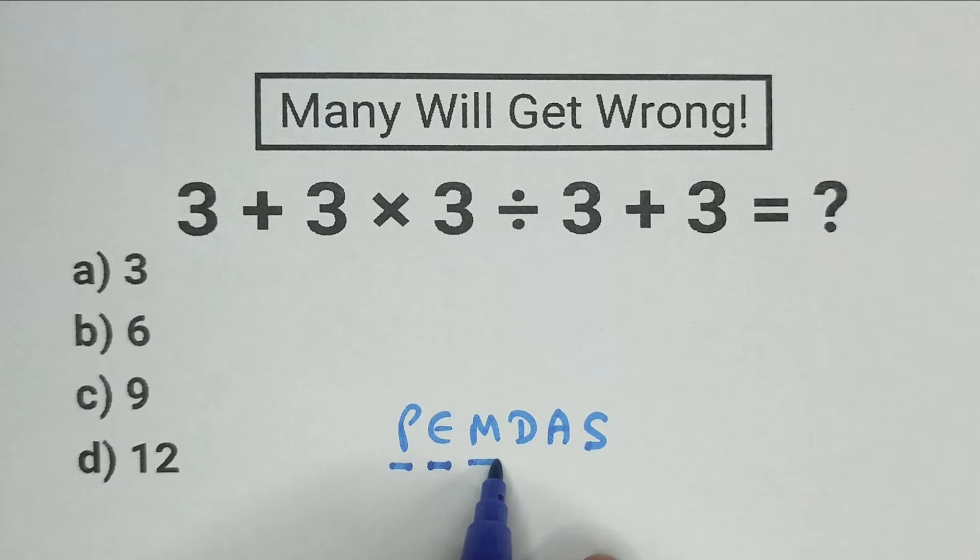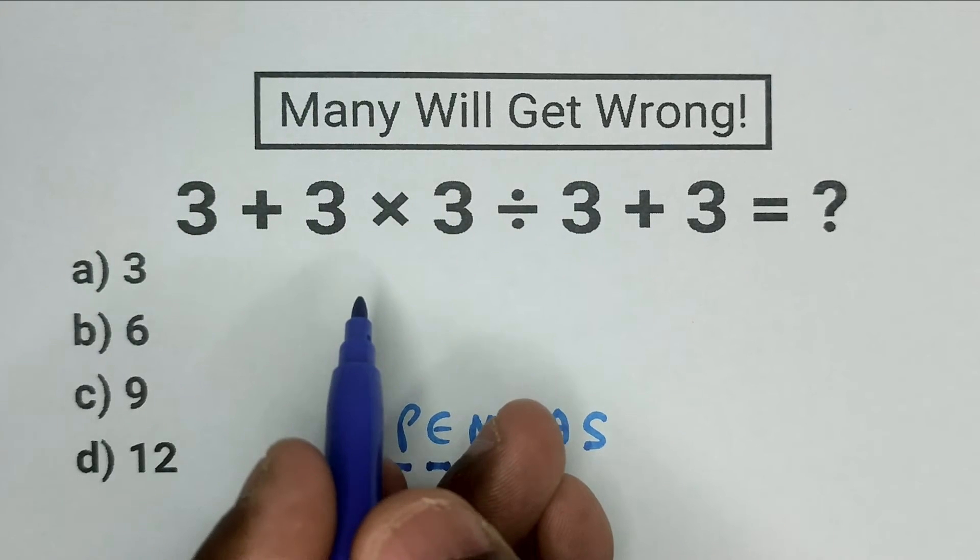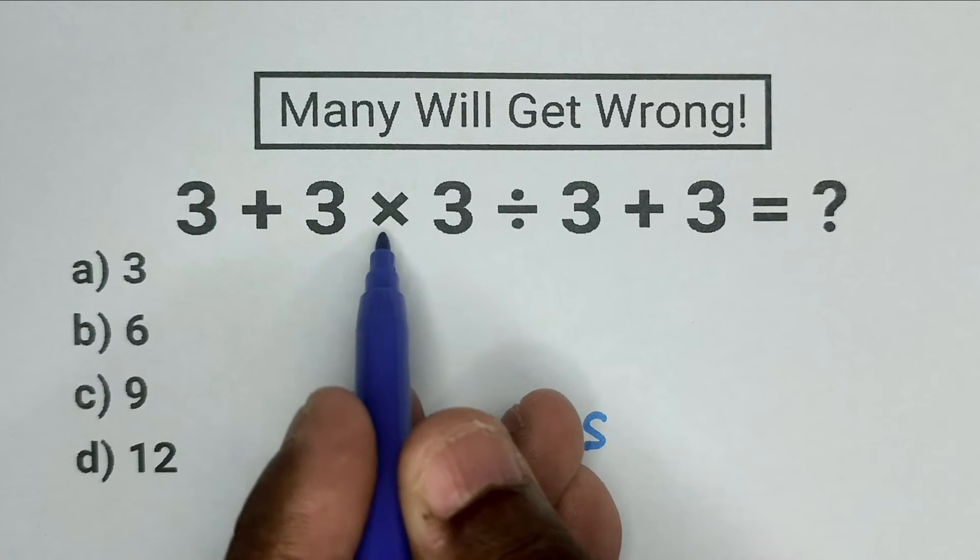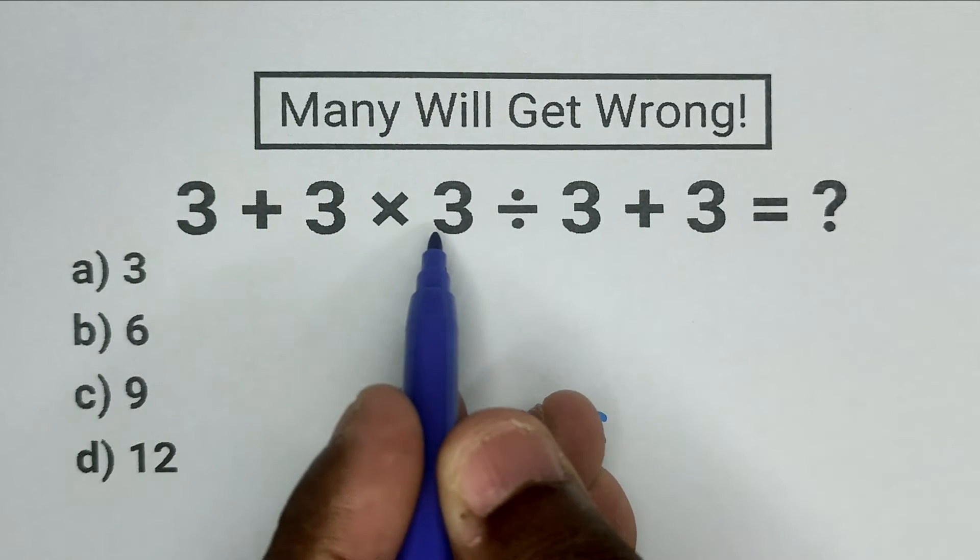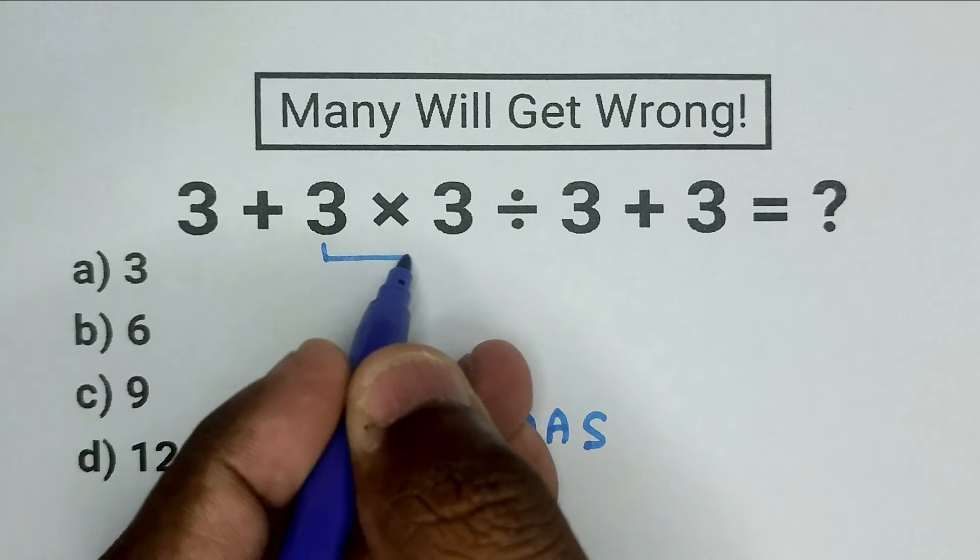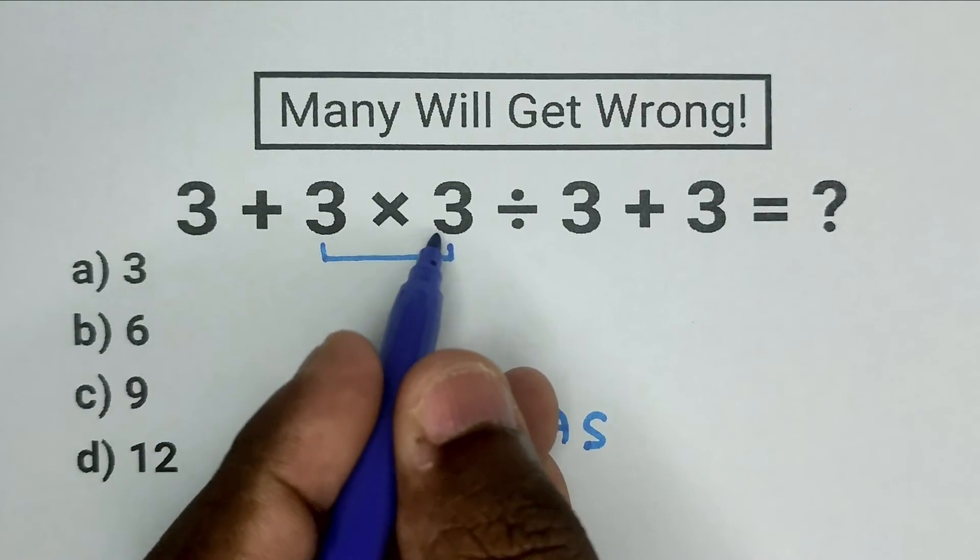Next, we have M, multiplication and we can see we have the multiplication here, 3 times 3. So, we have to do this first. 3 times 3 equals 9.